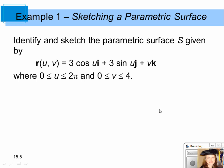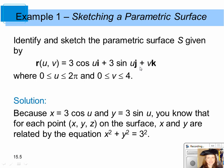In this example, we want to identify and sketch the parametric surface s given by r(u,v) equals 3cosine(u)i plus 3sine(u)j plus vk, where u is between 0 and 2π and v is between 0 and 4. The components give us x equal to 3cosine(u), y equal to 3sine(u), and z equal to v. We can eliminate the parameters u and v by rewriting these equations.